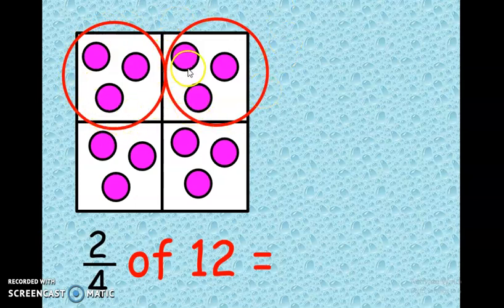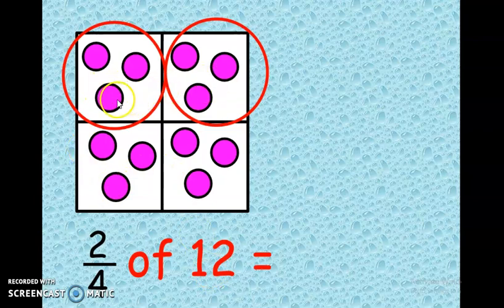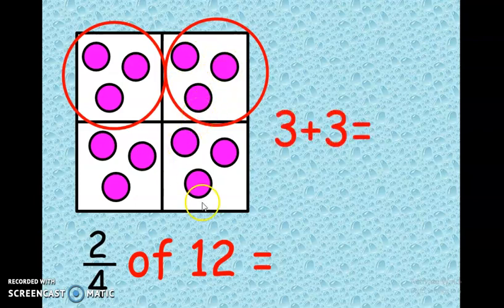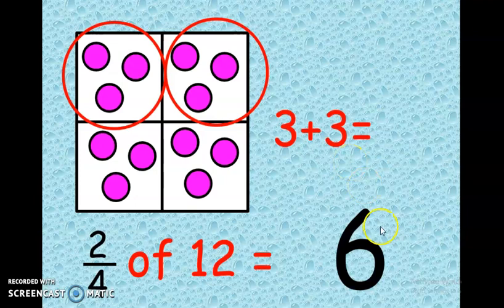Those are two boxes. So how many marbles are in two quarters of 12? Let's count: 1, 2, 3, 4, 5, 6. Our answer is 3 plus 3. Here is 3 on this side and 3 on this side, which means 3 plus 3 makes 6. Our answer is 6.